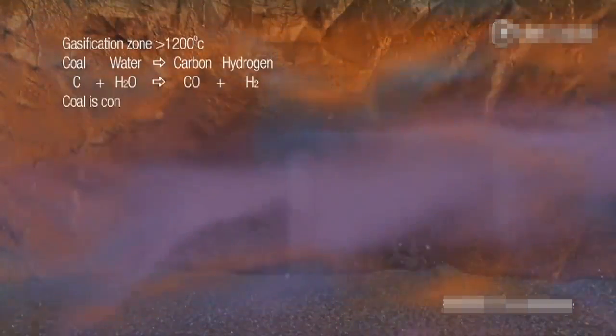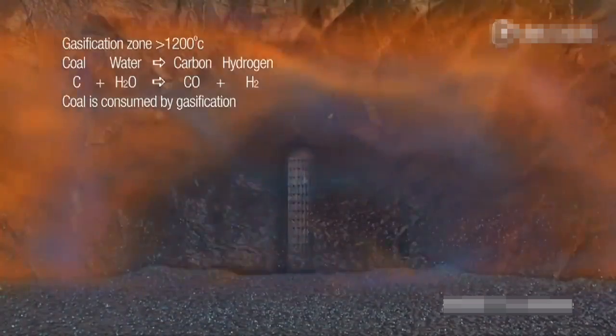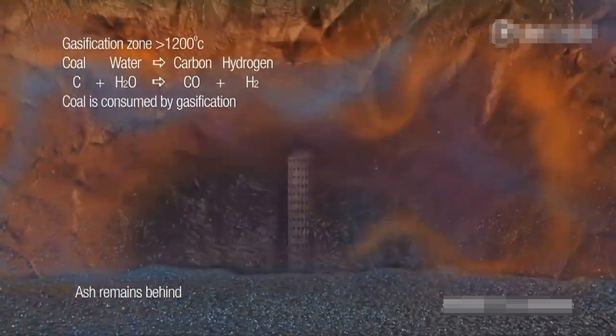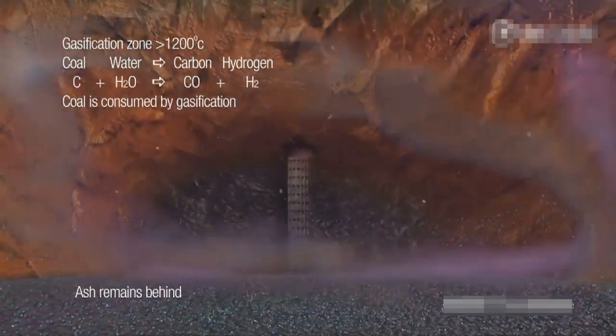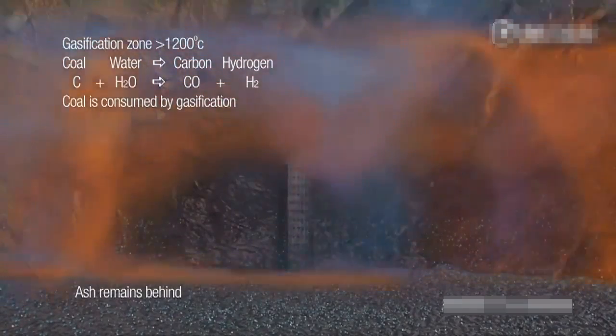The UCG site is chosen very carefully in order to ensure that the high-temperature zone is contained within the coal seam. The by-products of the UCG process remain behind within the coal seam as ash.